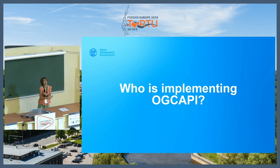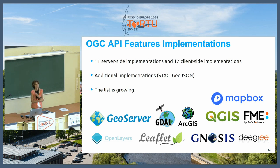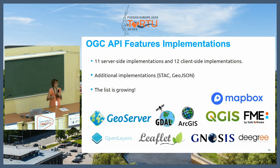Who is using these APIs? Taking the example of features, OGC API Features is one of the most mature of the family of OGC APIs — the first one to come up. You can see there are many server-side and client-side implementations using a bunch of different programming languages, with libraries and so on. If you go to the GitHub repository of the standard of OGC API Features, you will see this list that is growing. And if you have an implementation of OGC API Features or another API, you can do a pull request and submit it to be listed.